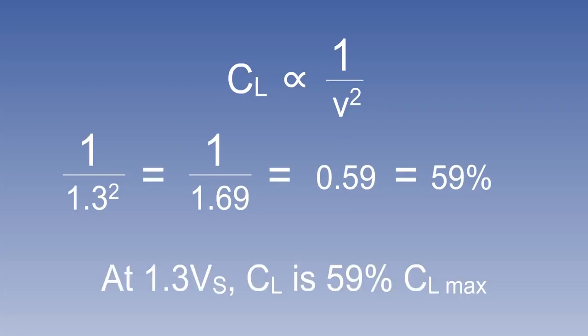So, while flying at 30% above minimum level flight speed, the C_L will be 59% of C_L max.